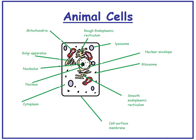Looking at an animal cell: animal cells have a cell surface membrane, a cytoplasm where the chemical reactions occur, a nucleus, and at the very centre of the nucleus is a nucleolus.